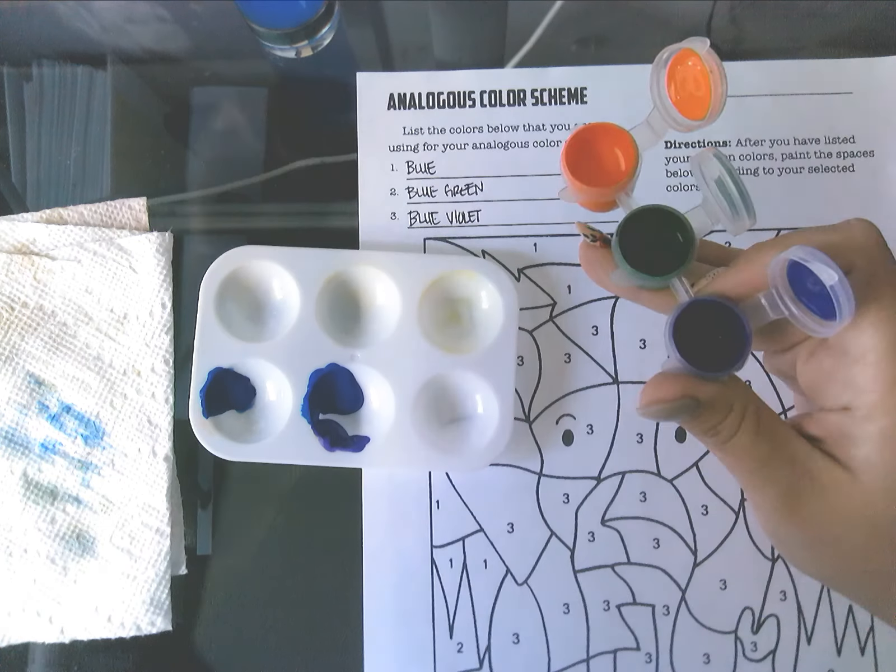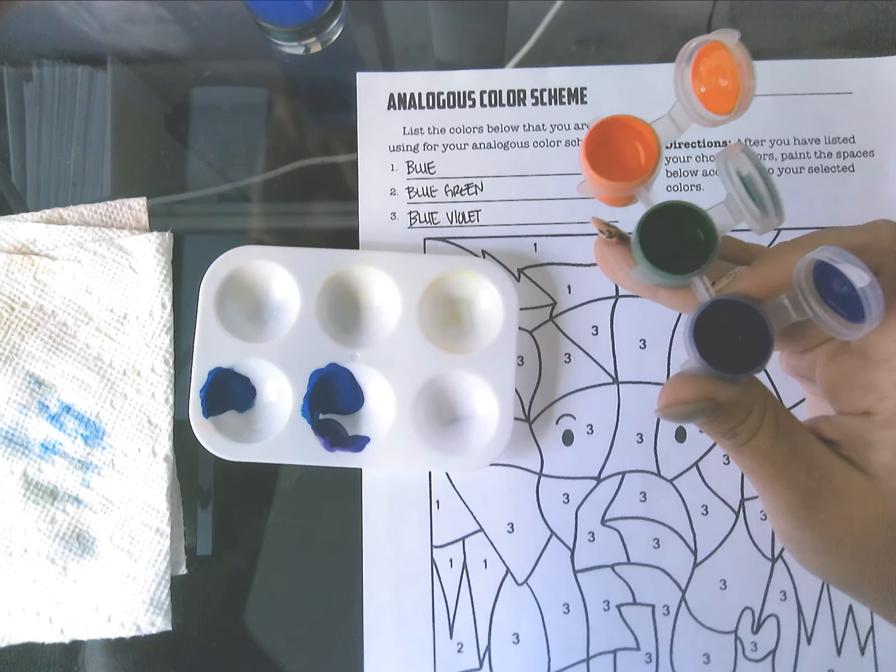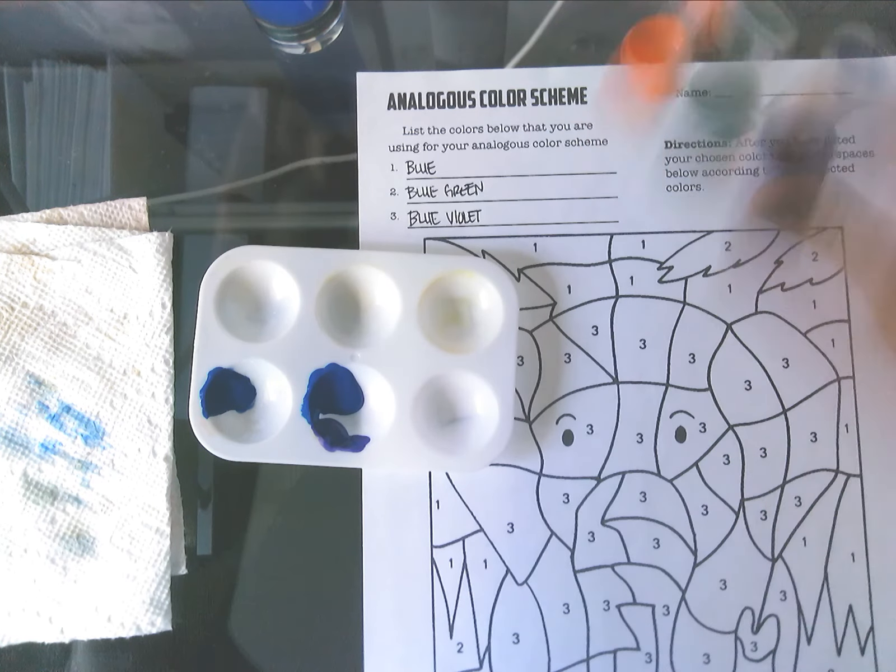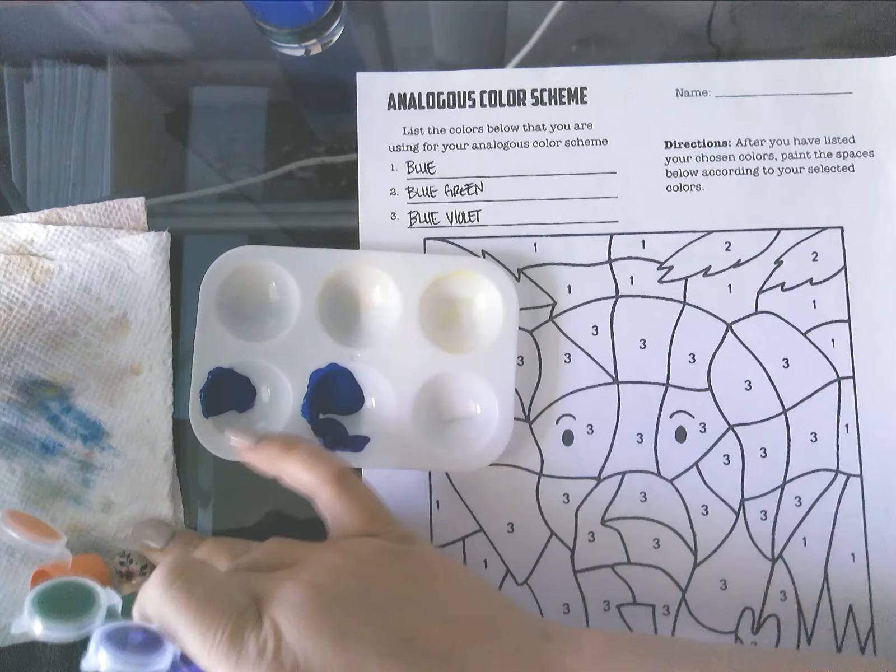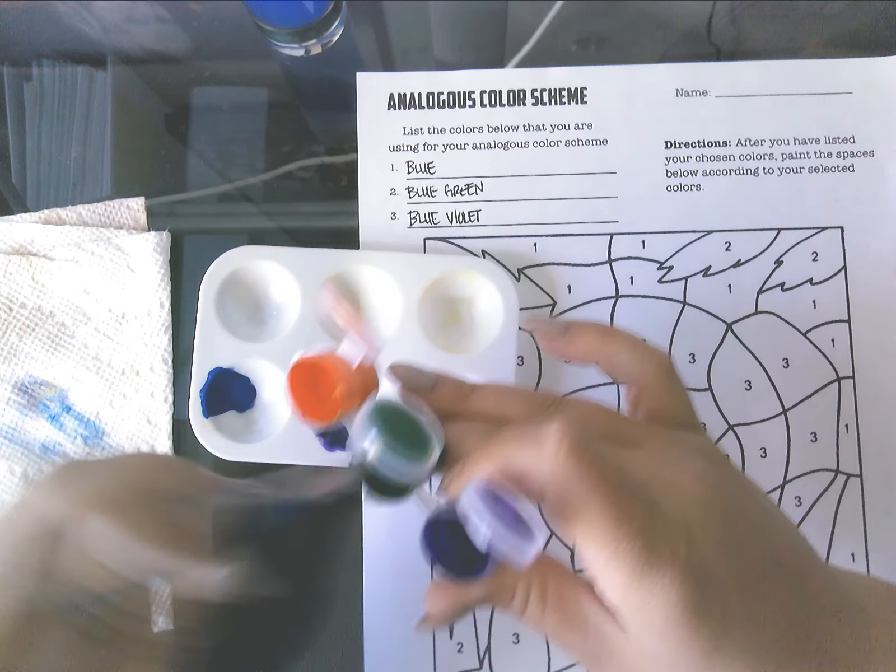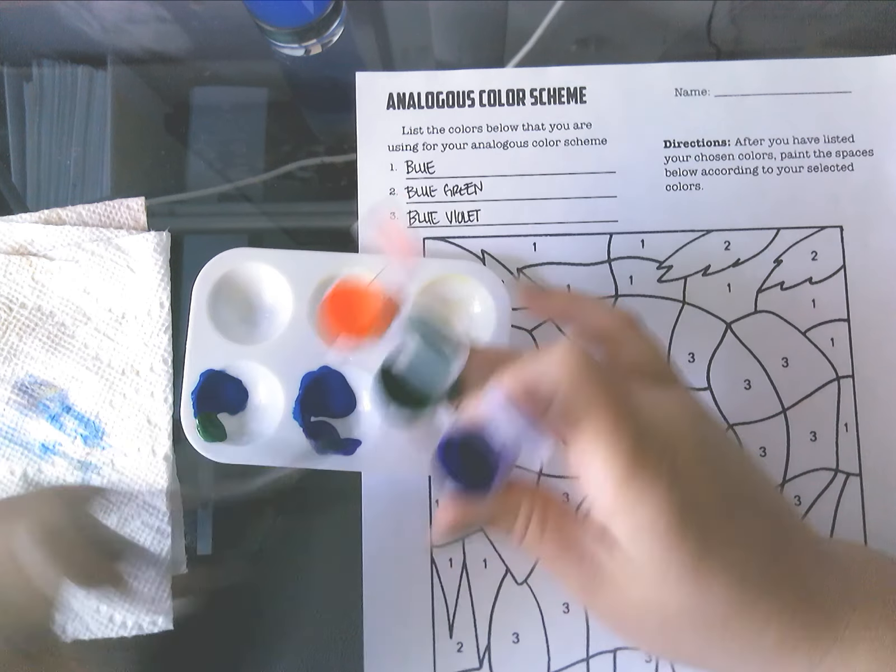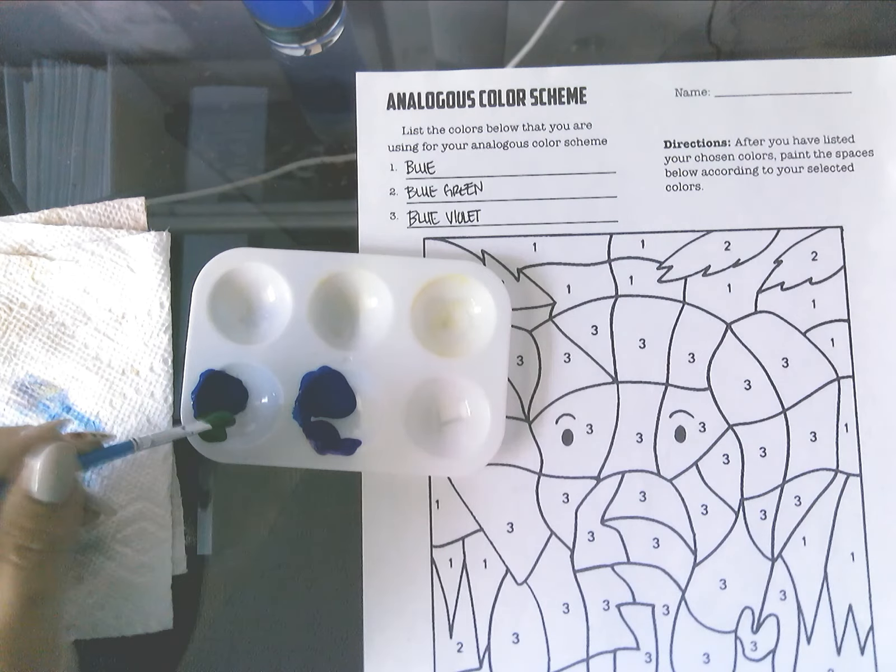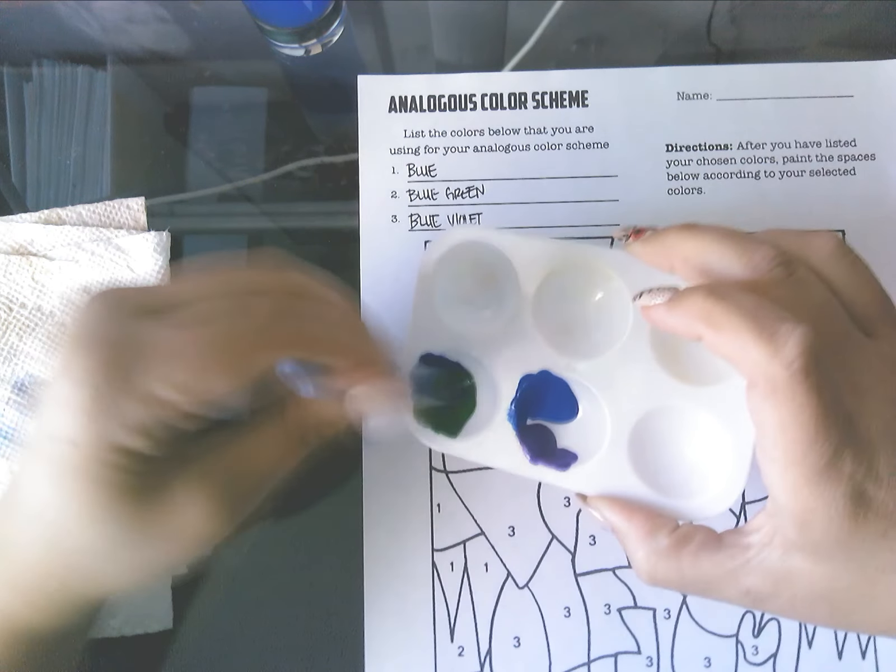Rinse this off. And then my last color I'm going to need to make is the blue-green. So get some green. Okay. And then I can just use the blue straight out of its container. So I'm going to mix these up.